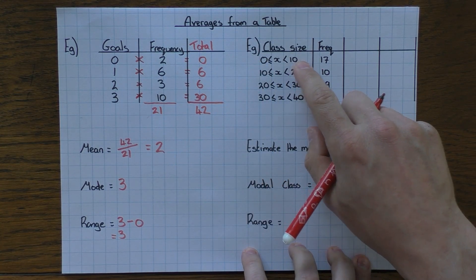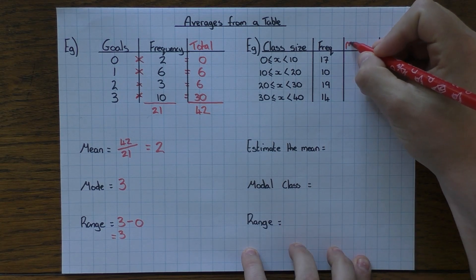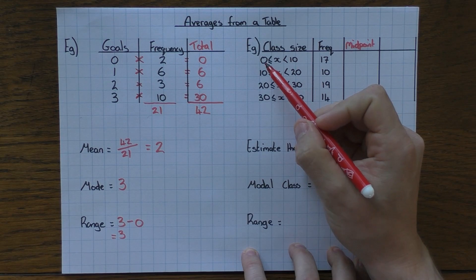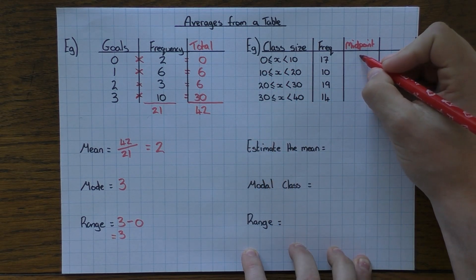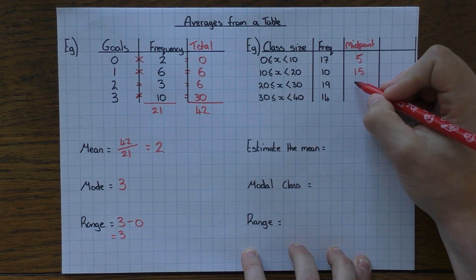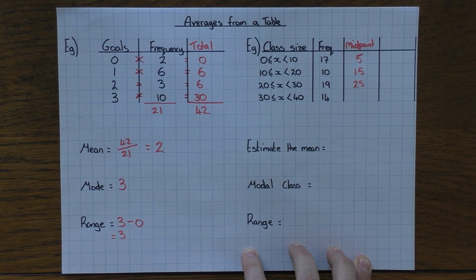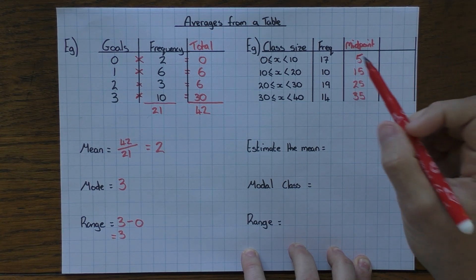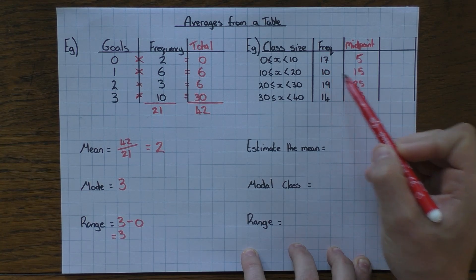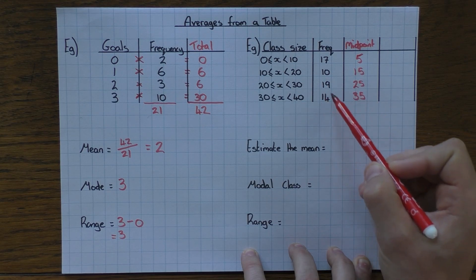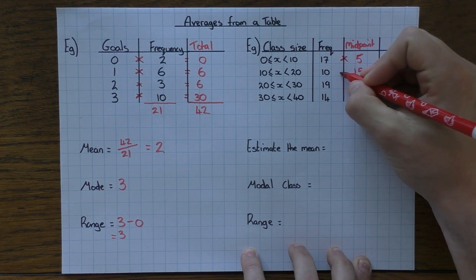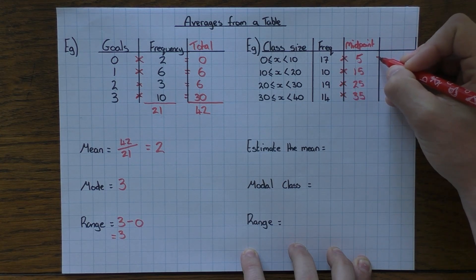Since we only want an estimate, we assume all values in each group equal the midpoint. To find the midpoint, add the two boundaries and halve: zero plus ten halved is five; ten plus twenty halved is fifteen; twenty plus thirty halved is twenty-five; thirty plus forty halved is thirty-five. So we assume all 17 values are five, all 10 values are fifteen, all 19 values are twenty-five, and all 14 values are thirty-five.